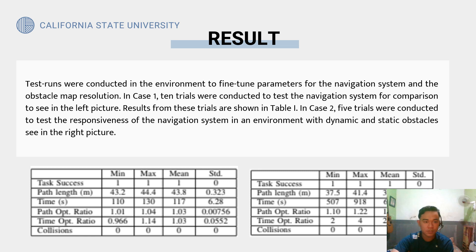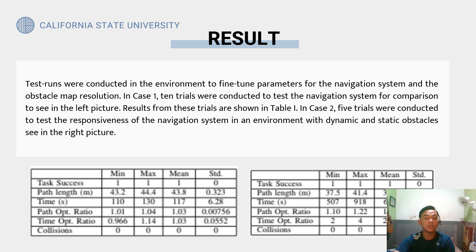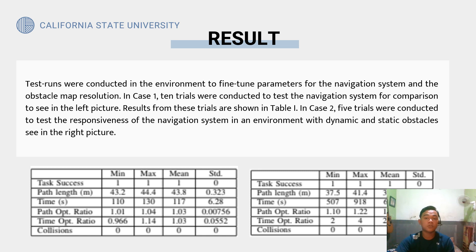Test runs were conducted to find the parameters of the navigation system and obstacle mapper solution. In Case 1, 10 trials were conducted to test the navigation, with results shown in Table 1. In Case 2, 5 trials were conducted to test the responsiveness of the navigation system in an environment with dynamic and static obstacles, as shown in the right picture.